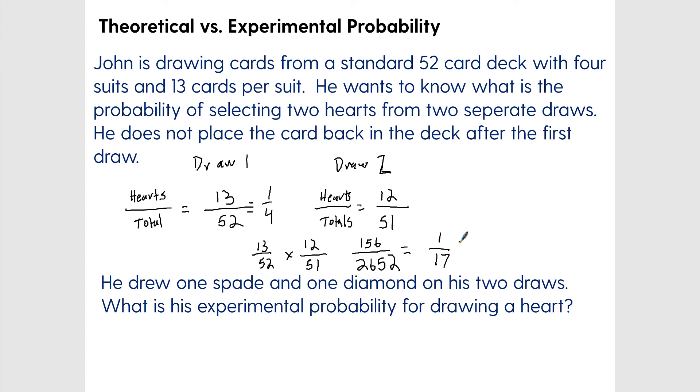Here, let's look at the second part, which is experimental probability. He drew one spade and one diamond on his two draws. What is the experimental probability for drawing a heart? This is looking backwards for experimental probability. How many hearts did he get? Well, he's gotten zero hearts—he got one spade and one diamond—out of the potential cards that he could have got, out of the total draws or total cards, is two. So the experimental probability is zero out of two, or zero percent.